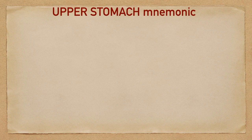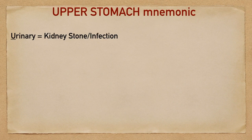That list of potential causes to upper abdominal pain is long, so I've got an easy mnemonic to help you remember the main emergent causes to upper abdominal pain, and this mnemonic fittingly is UPPER STOMACH. The U is going to help you remember urinary causes, and this includes things like kidney stone and infection, such as urinary tract infection and pyelonephritis.